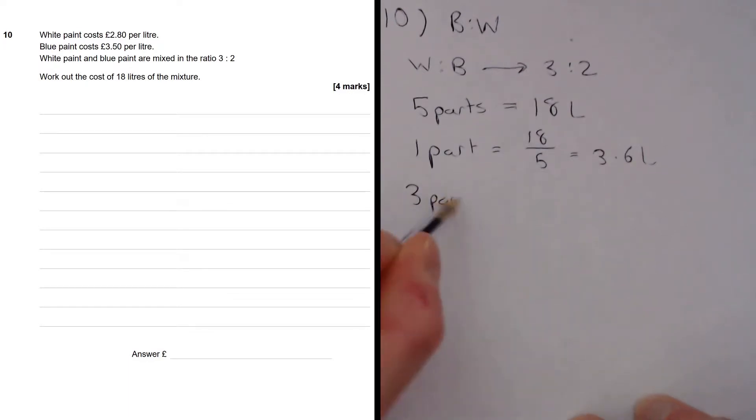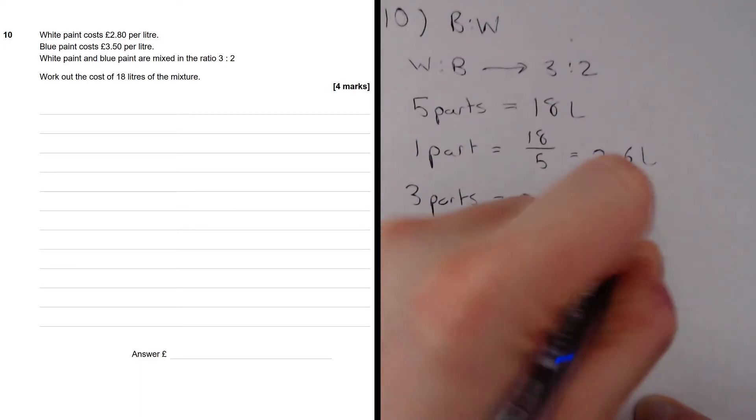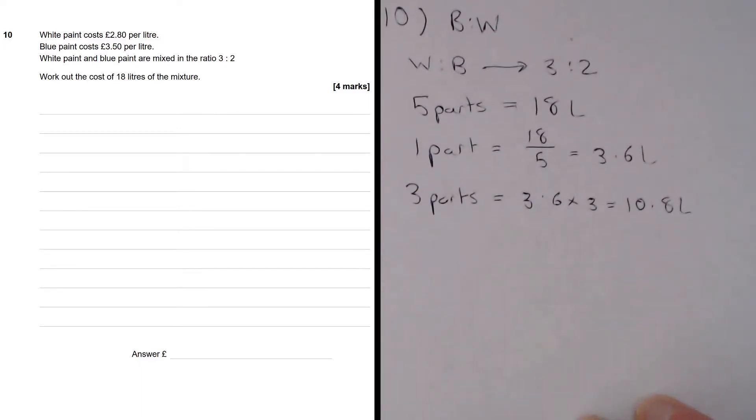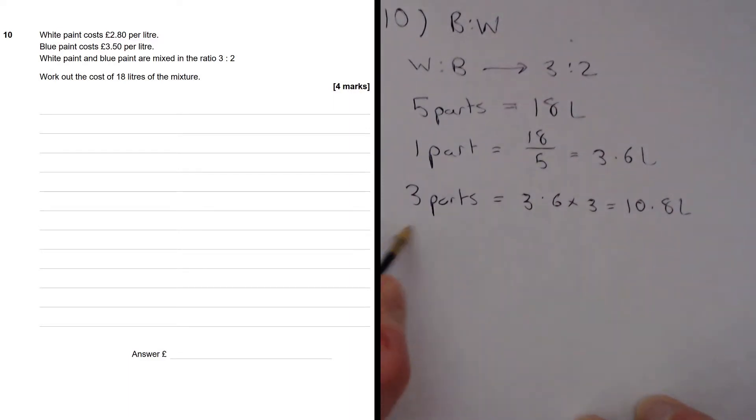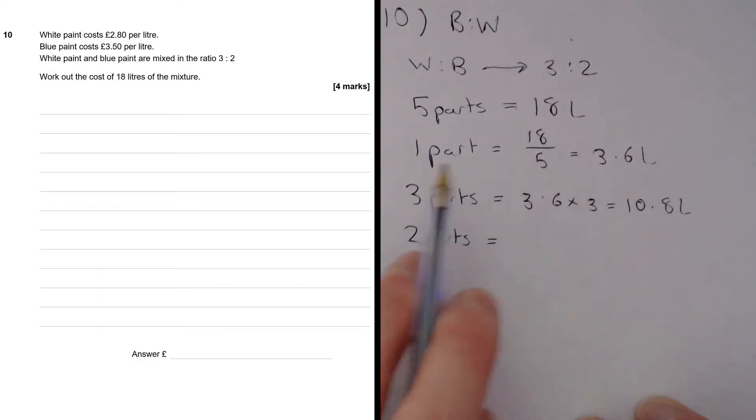So 3 parts must be equal to 3.6 times 3 which is 10.8 litres. So we need 10.8 litres of white paint. And 2 parts must be equal to, or we need to multiply this 1 part equation by 2 to get 2 parts. So we get 3.6 times 2 which is 7.2 litres. Now of course 10.8 and 7.2 add up to 18 litres which is what we would expect. There are 18 litres in total.